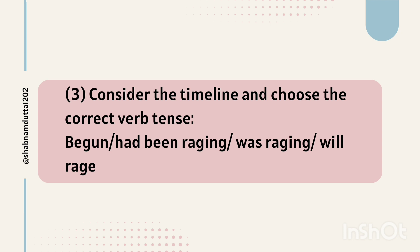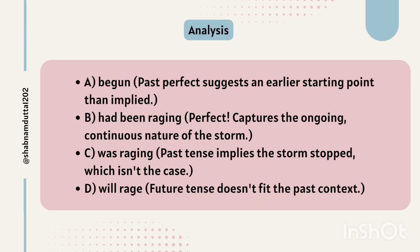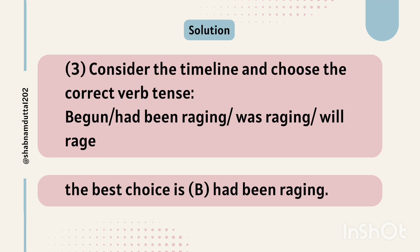Consider the timeline and choose the correct verb tense. 'Raged' is the simple past tense, which suggests an earlier starting point than implied. 'Had been raging' is perfect because it captures the ongoing, continuous nature of the storm. 'Was raging' is past continuous, which implies the storm stopped — which is not the case. 'Will rage' is future tense and doesn't fit the past context. Therefore, the best choice is B. Had been raging.